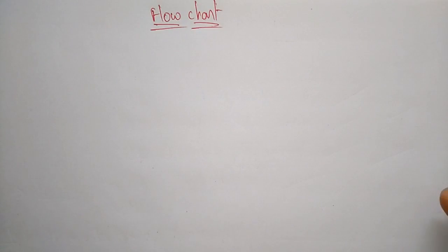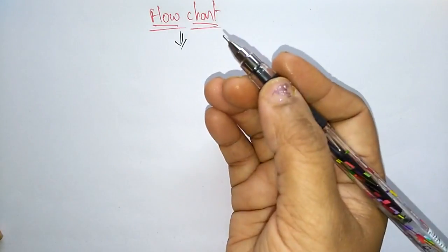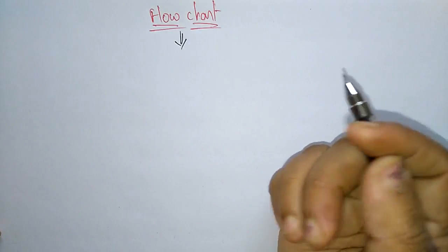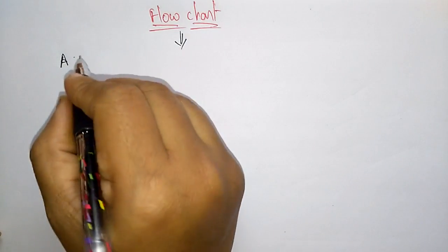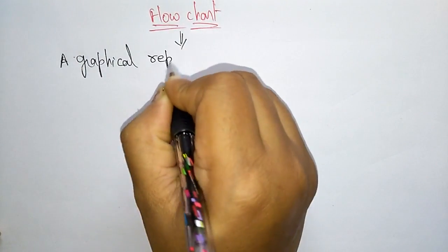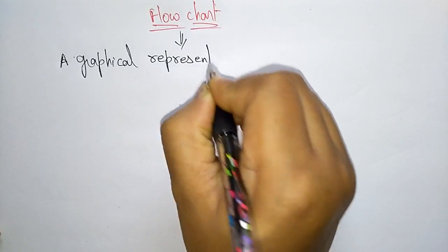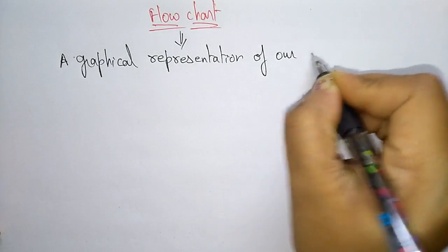Hi students, coming to the next topic that is flowchart. In the previous video, I explained about the algorithm. Now let us see what is a flowchart. A flowchart is nothing but a graphical representation of an algorithm. So whatever algorithm we have taken, this is a graphical representation of it.